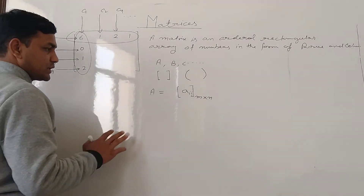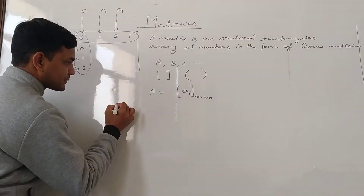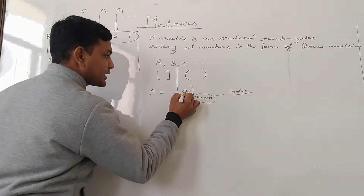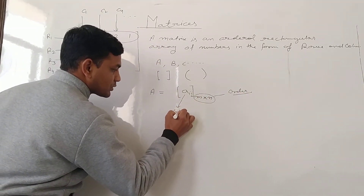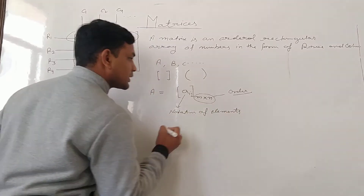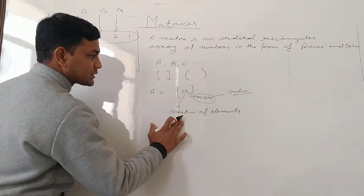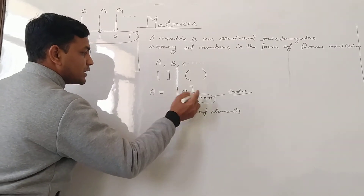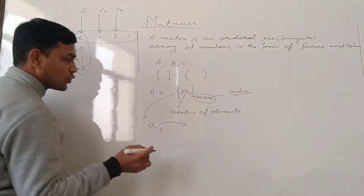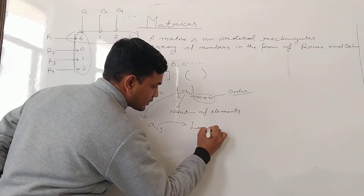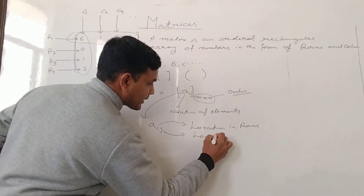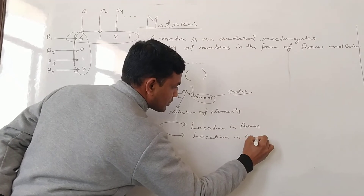According to this notation, M and N represent the order of the matrix. We can represent the notation of elements by A-i-j, where the index i represents the location in the rows and j represents the location in the column.